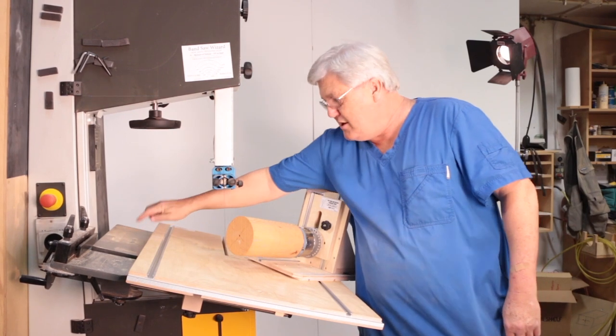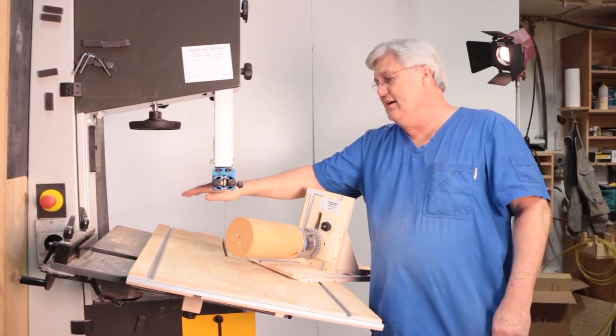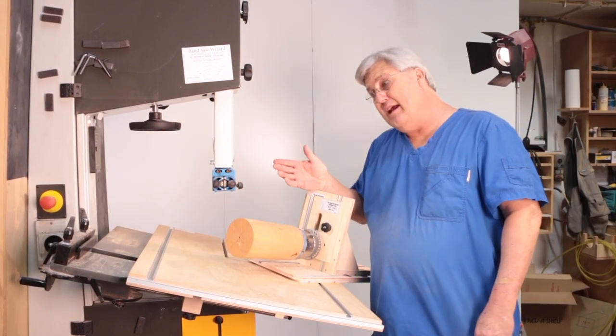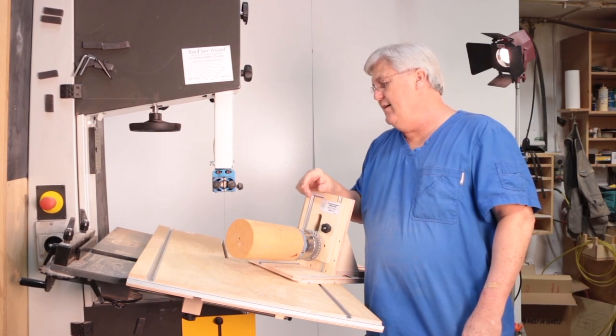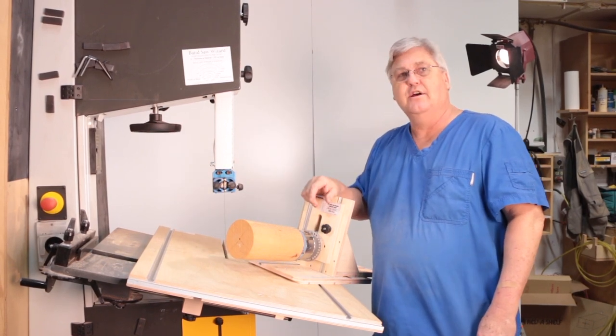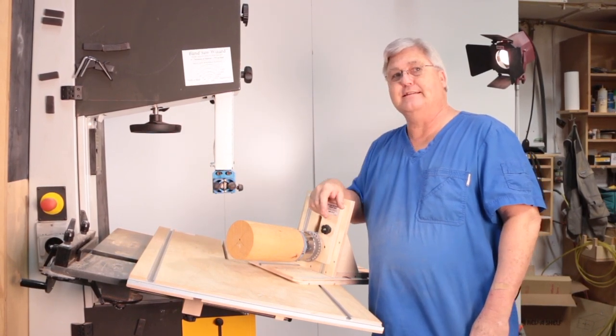You can set your bandsaw table at any angle. Some of them you can, some you can't. This one goes up to 45. I chose 15 degrees only for the camera so they can see what's going on.